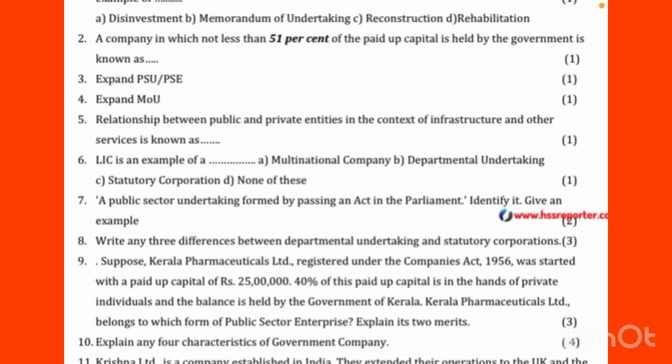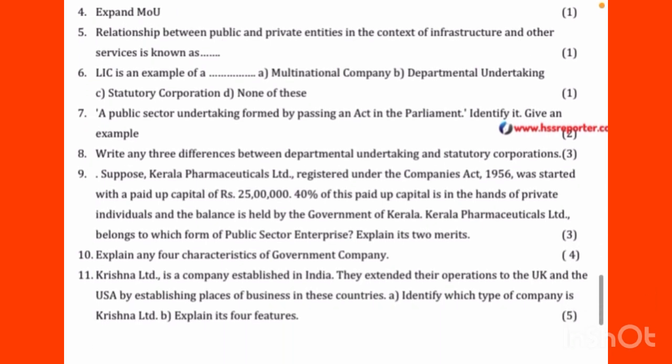LIC is an example of which type of company? The options are: Multinational, Departmental, Statutory, or None of these. The answer is Option C - LIC is an example of a Statutory Corporation. A Statutory Corporation is formed by passing an Act in the Parliament.